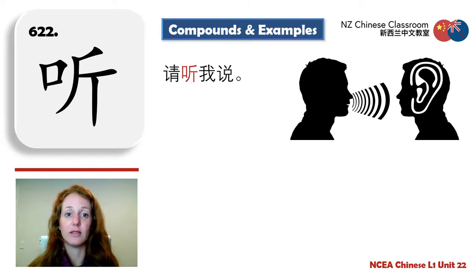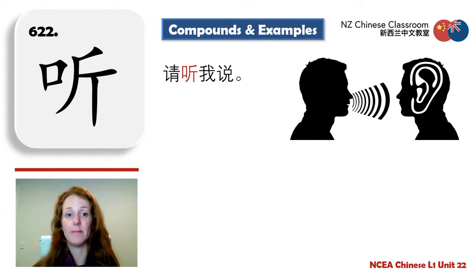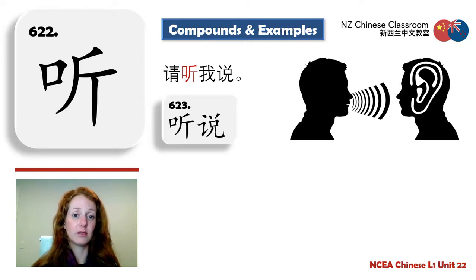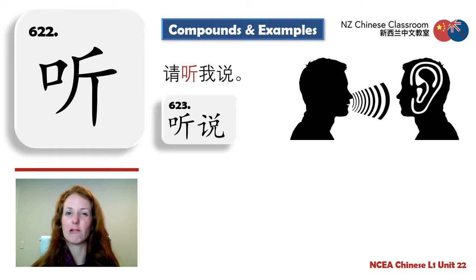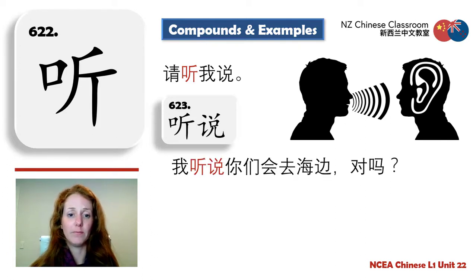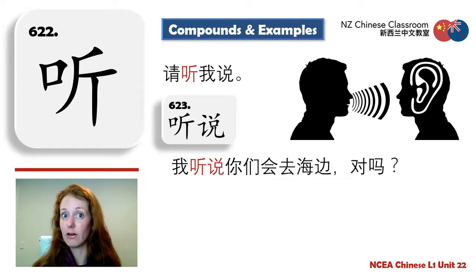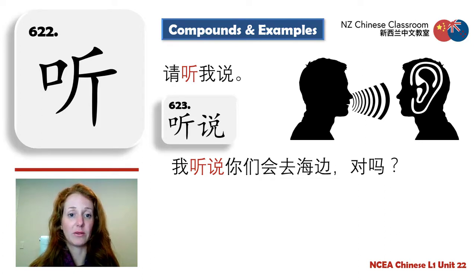听 — to listen. 听我说 — listen to what I say. And 听说 — someone listens, someone says, so it means 'to hear about' or 'to hear of something.' Example: 我听说你们会去海边，对吗? — I heard that you guys might be going to the beach. Is that right? This is listening to what someone else has said.